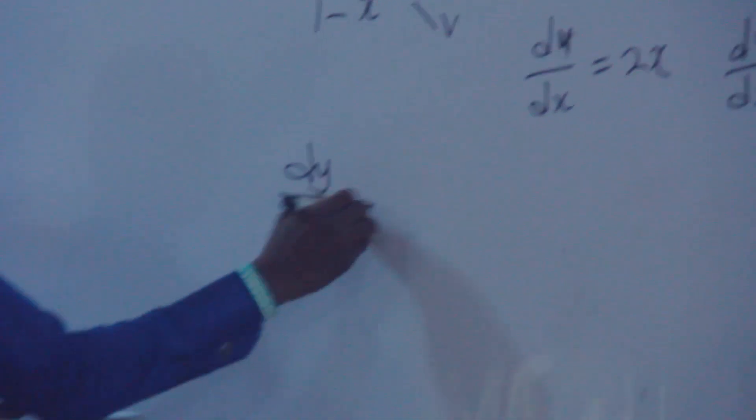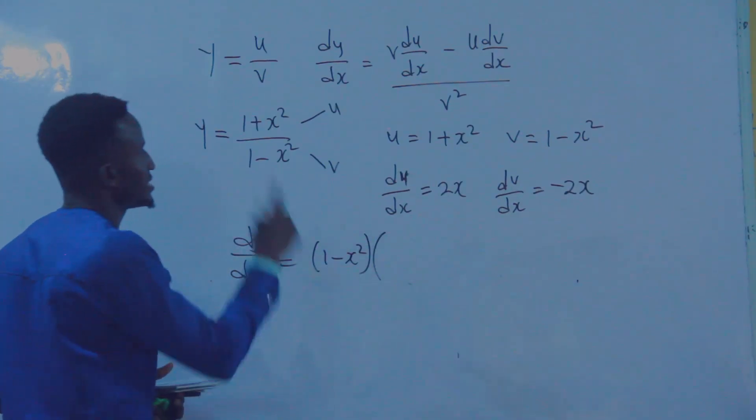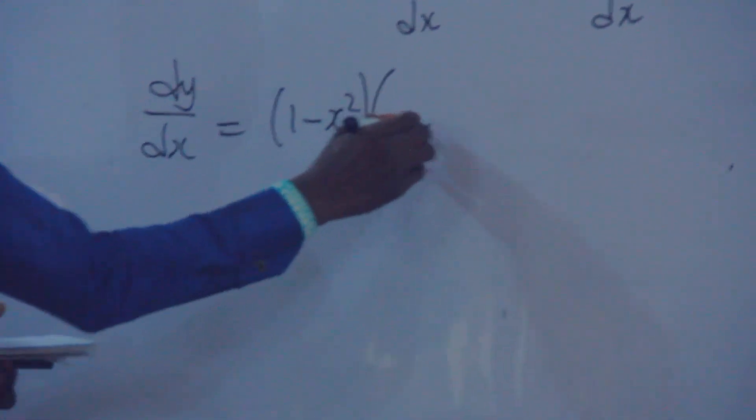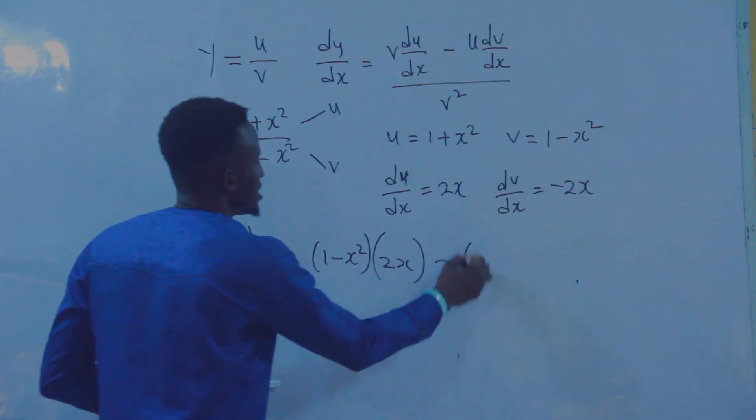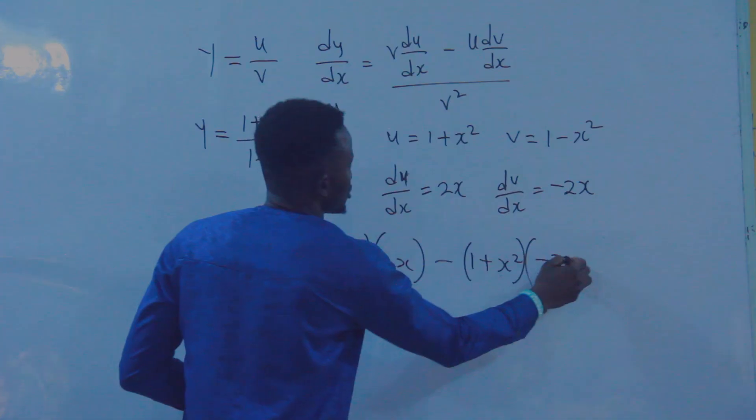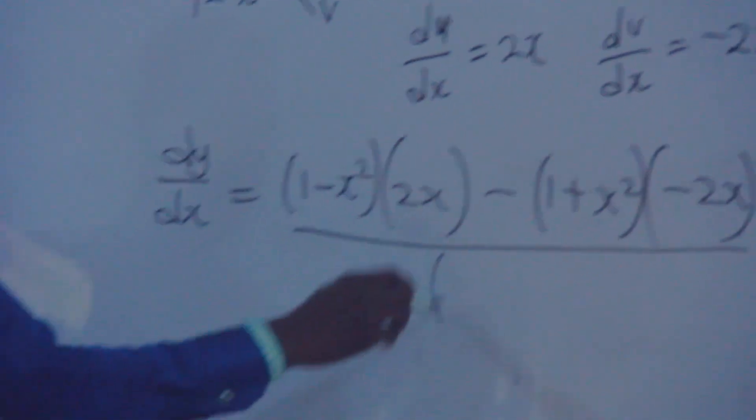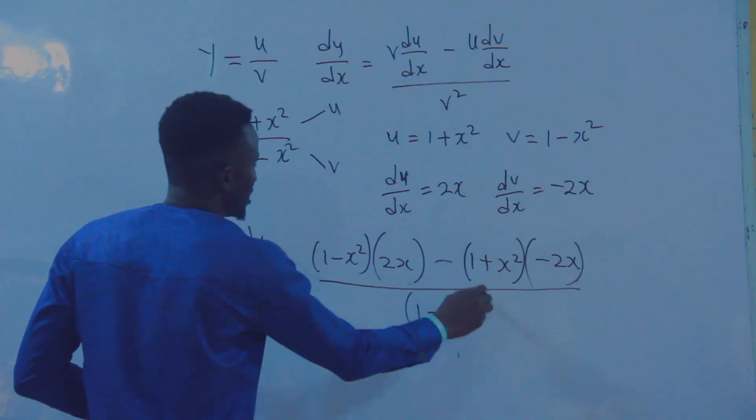So that means dy/dx will now be: v, which is one minus x squared, in brackets times du/dx, which is 2x, minus u, which is one plus x squared, in brackets times dv/dx, which is minus 2x, all over v squared, which is one minus x squared squared.